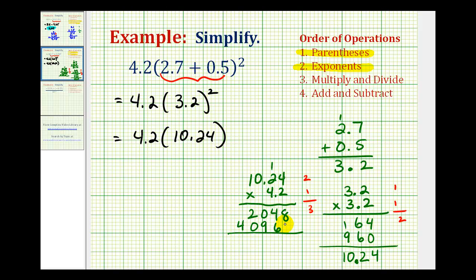Now we'll add, again if we want, we can put a 0 here, 8 plus 0 is 8, 4 plus 6 is 10, carry the 1, 1 plus 9 is 10, carry the 1, 3 and 4. But because we have to have 3 decimal places, we'll start at the right and move left 3 places, 1, 2, 3, so this product is 43.008, or 43 and 8 thousandths.